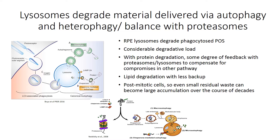The lysosome is needed to degrade material delivered via classic autophagy pathways, including the fusion of the autophagosome with the lysosome through the macroautophagy pathway. Material is also delivered through chaperone-mediated autophagy via the receptor LAMP2. However, RPE cells have a considerably greater load than most cells because they must also degrade photoreceptor outer segment tips that are phagocytosed and delivered to the lysosome.